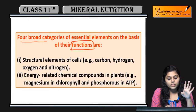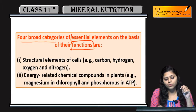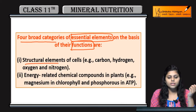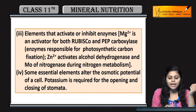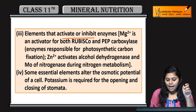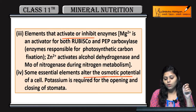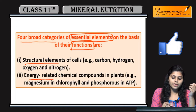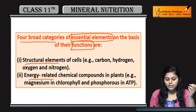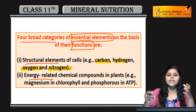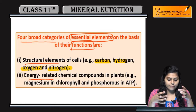On the basis of their functions, essential elements are categorized into four major categories. The first category is structural elements — carbon, hydrogen, oxygen, and nitrogen — which provide structural support to the plant.